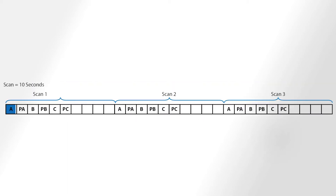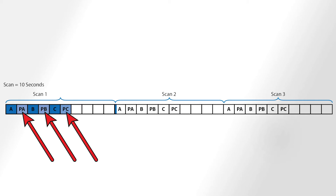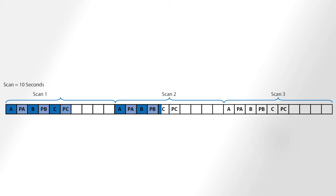Here we have three measurements: A, B, and C. Each measurement needs processing, shown by PA, PB, and PC. In this simple example, processing includes applying multipliers and offsets and performing output calculations. We also see that there is some idle time in the scan — the white squares. Idle time is created when the data logger has completed all its tasks before the scan interval time elapses; in other words, it takes less time to complete its tasks than the scan interval.